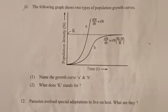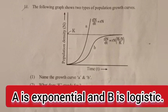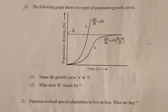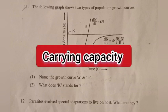Question 11: The following graph shows two types of population growth curves. Name the growth curves A and B. Answer: A is the exponential curve and B is the logistic curve. Question 2: What does K stand for? Answer: K stands for carrying capacity.